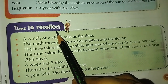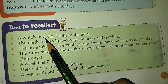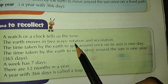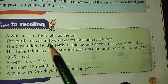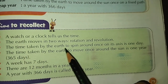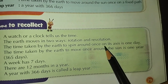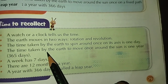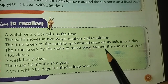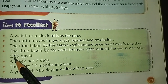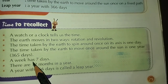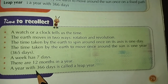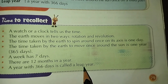Time to recollect. A watch or a clock tells us the time. The Earth moves in two ways: rotation and revolution. The time taken by the Earth to spin around once on its axis is one day. The time taken by the Earth to move once around the Sun is one year, 365 days. A week has 7 days. There are 12 months in a year.